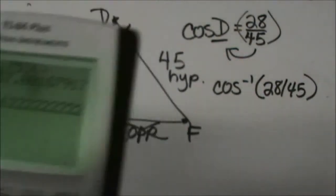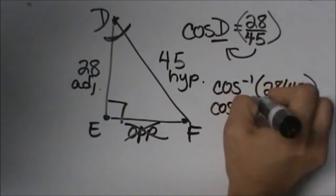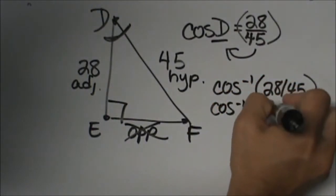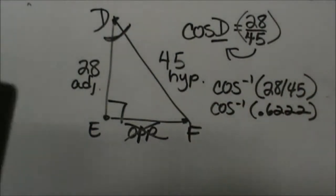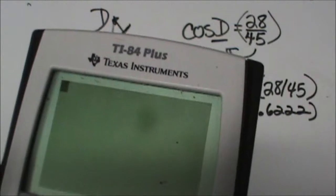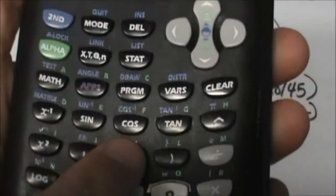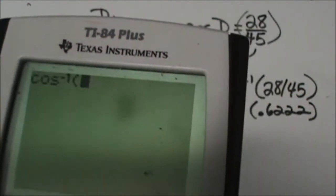0.6222 repeating. So you could also take the cosine, the inverse of .6222 repeating. It's really up to you. Okay, I'm going to go ahead and clear this and go ahead and run through that. So I'm going to take a second function. Second of my cosine to get that. And I'm going to put my fraction in.